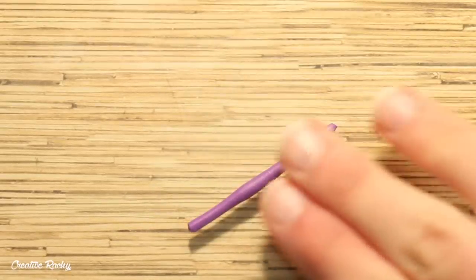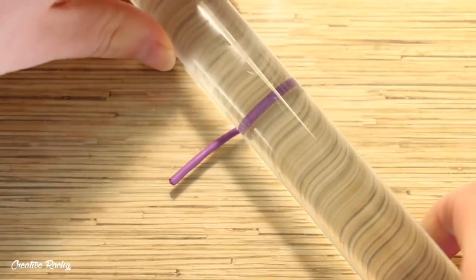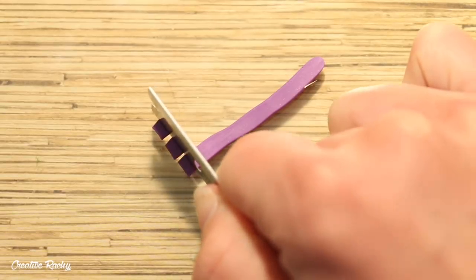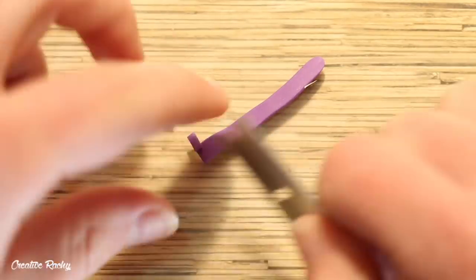Now to add the colored ruffles roll a coil of your clay and flatten it down using a rolling pin. Then use a blade to cut off some even sized sections and you'll want to create a whole bunch of these.